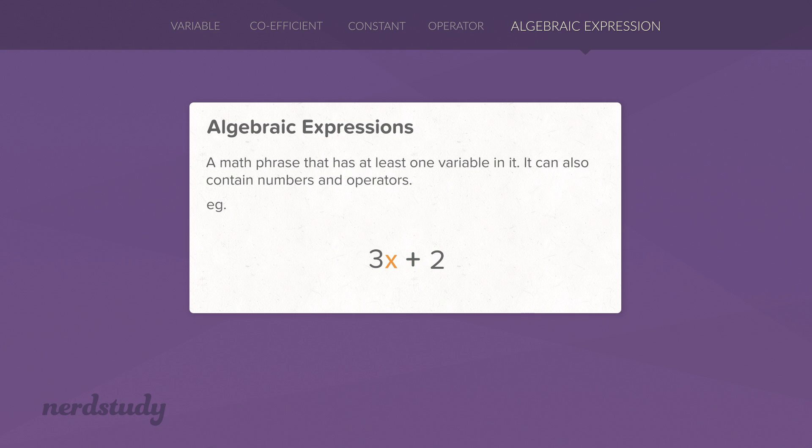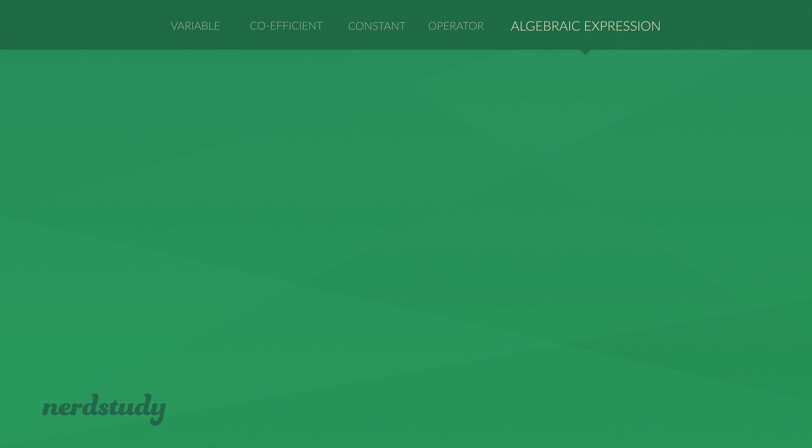Now, because it has a variable in it, its final value can vary. So let's take a look at some of the different types of algebraic expressions.